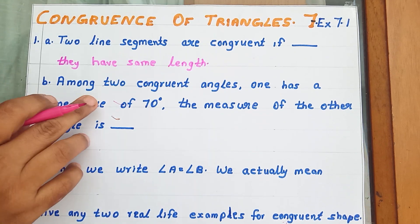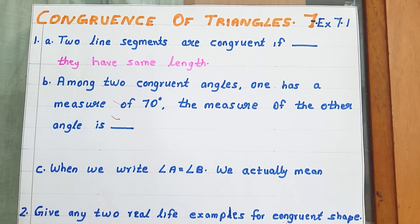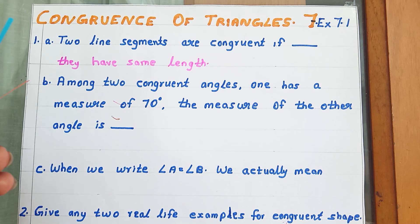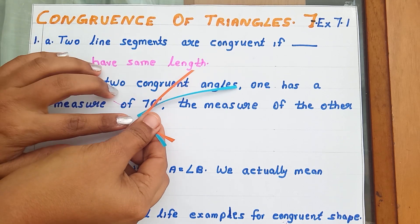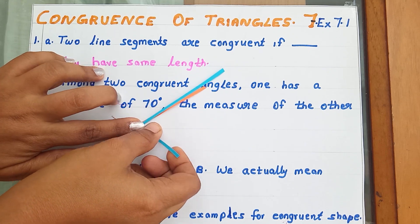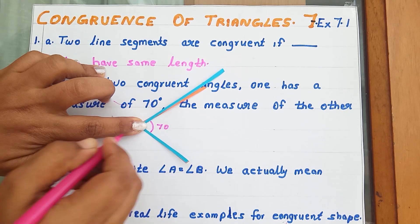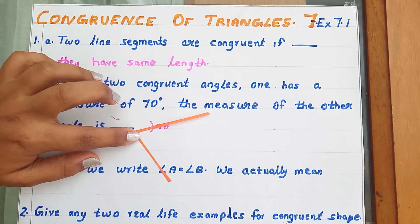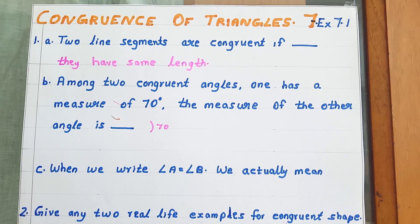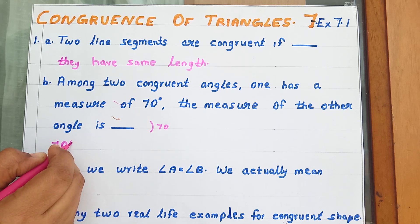Question B: Among two congruent angles, one has a measure of 70 degrees — what is the measure of the other angle? I have brought two angles. If we keep one angle over the other it matches exactly, and its measure is 70 degrees. So one angle is 70 degrees means the other angle is also 70 degrees. The answer is 70 degrees.